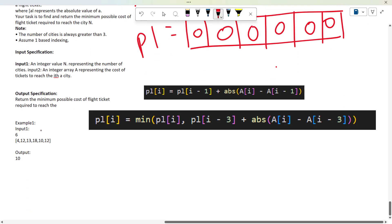They're giving input 1 and input 2, where input 1 is the number of cities and input 2 is the array of prices. They have given us a formula to get prices from that. For example: 4, 12, 13, 18, 10, 12. The output should be 10.